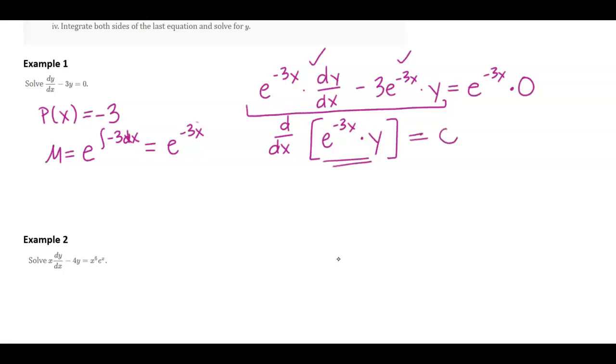And then my right-hand side just gives me 0, because anything times 0 gives me 0. So I'm going to integrate. This just cancels, and I'm left with e to the negative 3x times y must be equal to some constant. I'm going to integrate with respect to x on both sides. Just gives me some constant over here. And so when I divide by e to the negative 3x, I can say that y must be c e to the positive 3x.